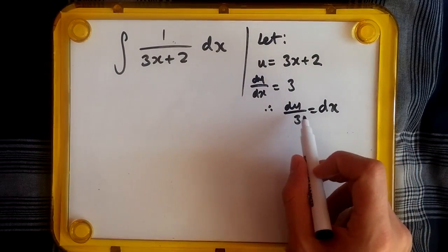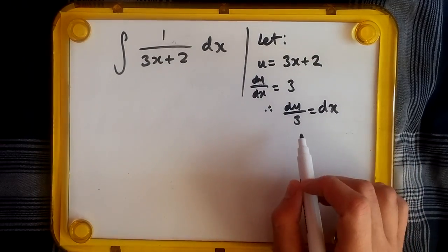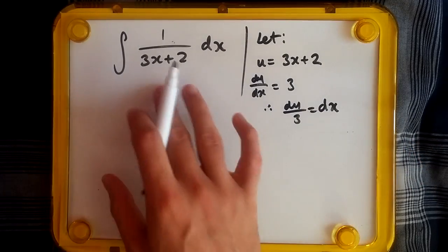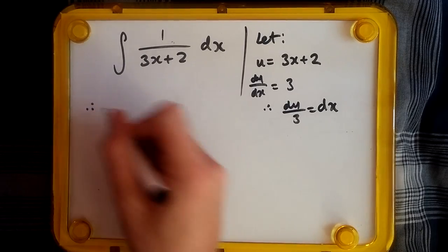Purpose of this is to replace dx with du over 3. Because you get a constant 3, then this makes the whole process dead easy. Now, let's substitute everything we got back into here. What do we get?